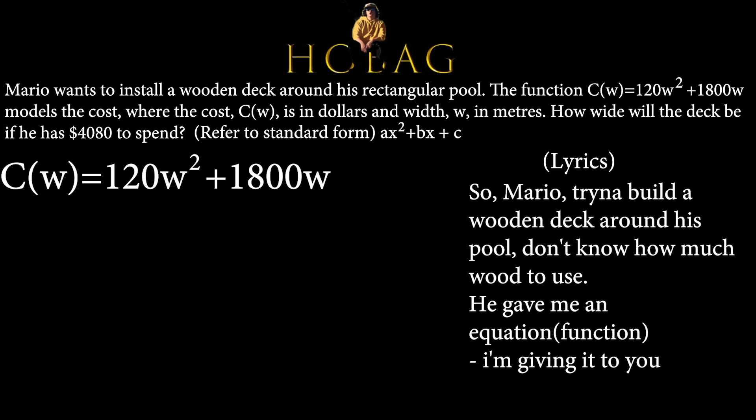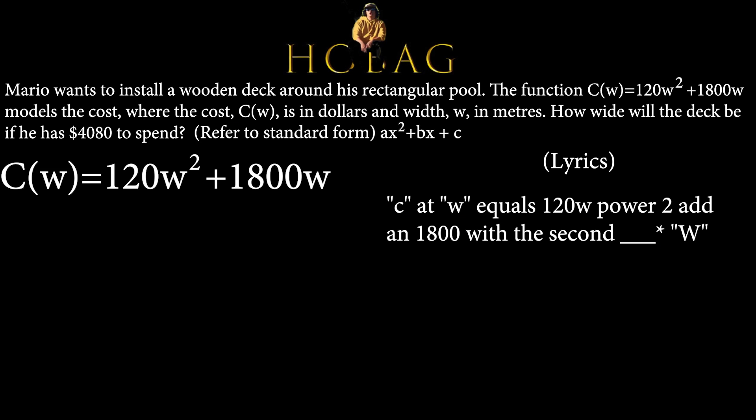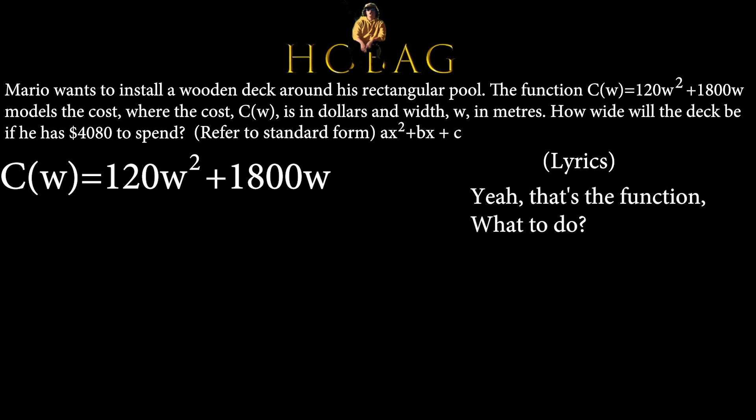Mario trying to build a wooden deck around his pool. Don't know how much wood, he gave me an equation, I'm giving it to you. C(w) equals 120w power 2, add 1800 with the second w. Yeah, that's the function. What to do? Complete the square, substitute methods 1 and 2.